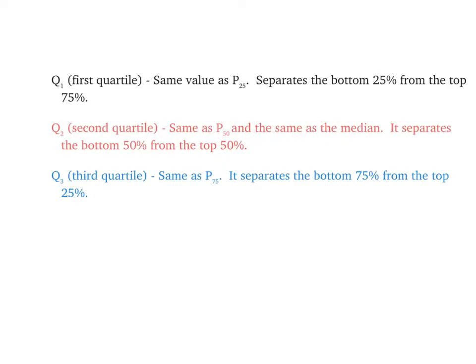Q1 is the first quartile, same as P25, separates the bottom 25 and the top 75. Q2 is the second quartile, same as P50, separates the bottom 50 and the top 50. Third quartile, same as P75, separates the bottom 75 and the top 25. So the quartiles break our data set into four equal parts.